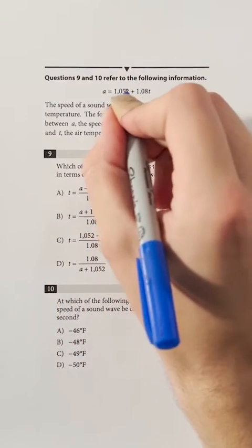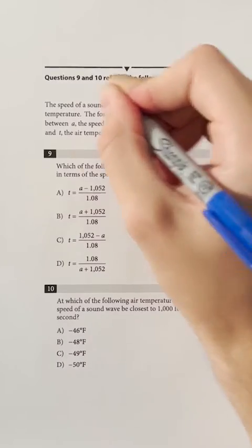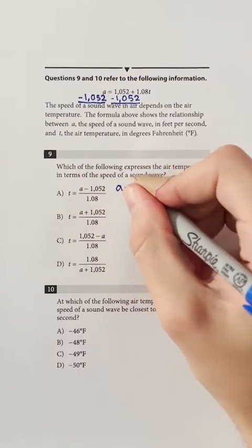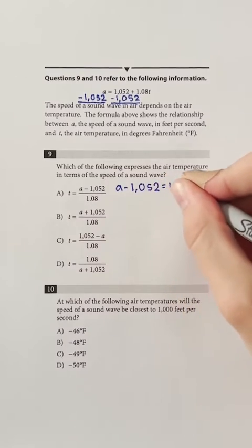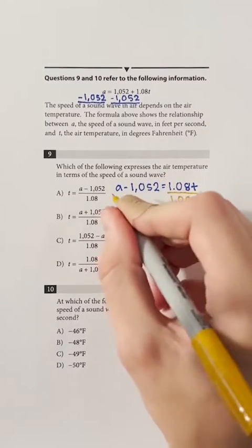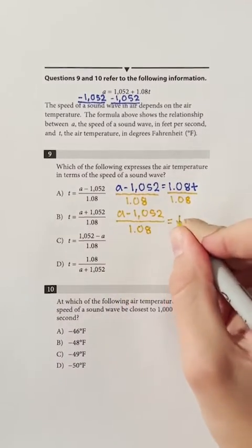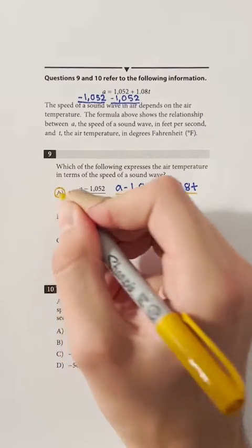We just need to isolate T on one side of the given equation. So, we can first subtract 1052 on both sides of the equation to get A minus 1052 equals 1.08T. Lastly, we can divide both sides of the resulting equation by 1.08 to see that T equals A minus 1052 over 1.08, which is A.